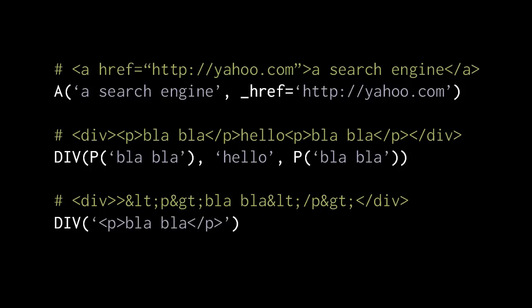In the second example, we're creating a div object and passing to it three positional arguments, two of which are other helper objects — P-tag objects, paragraph tags. What we end up with is a div containing first a P-tag with the text 'blah blah', then the text content 'hello', and then another P-tag also with text content 'blah blah'. An important thing to understand is that a string argument is treated as text content, so it is effectively XML escaped.